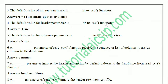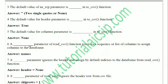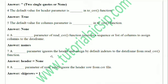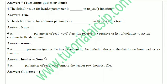Fill in the blanks continued. The `names` parameter of `read_csv` receives a sequence or list of columns to assign column names to the DataFrame. A dash parameter ignores the header and assigns default indexing to the DataFrame from `read_csv`. To ignore the header row from the CSV file when storing data in a DataFrame, use the `skiprows` parameter — `skiprows=1`.